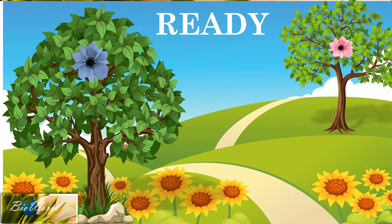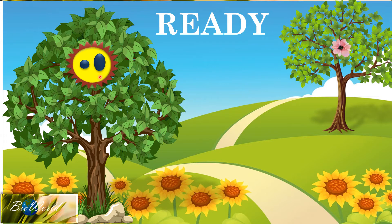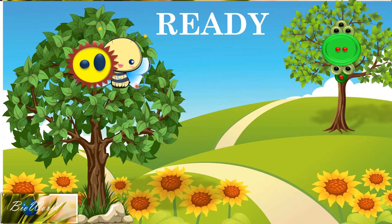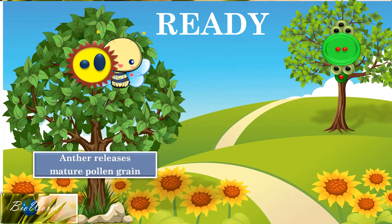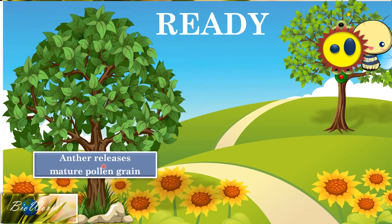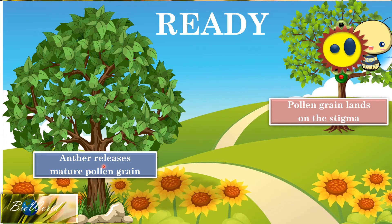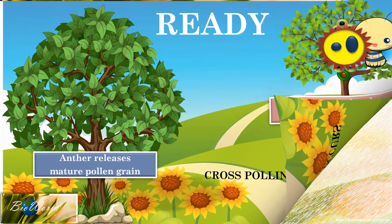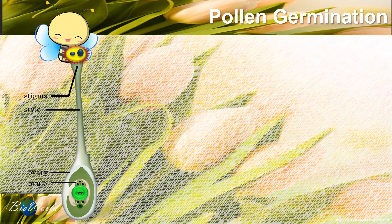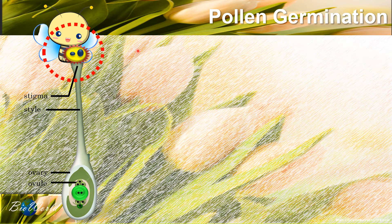Now the plants that have flowered have produced both the mature pollen grain as well as the mature embryo sac. The next step will be for the pollinating agent to collect the mature pollen grain and transport it to the flower to place it on the stigma. This is how cross-pollination occurs. Well done — the bee has successfully carried out pollination.